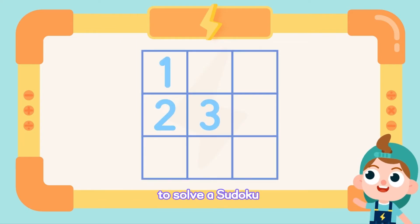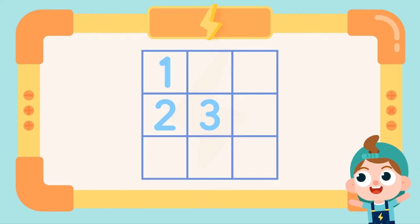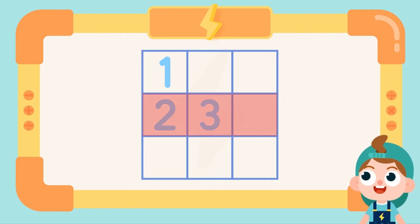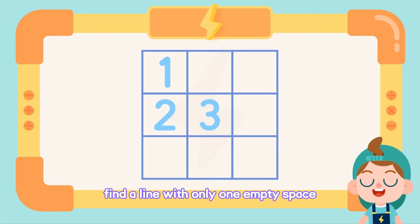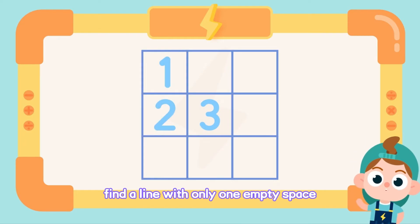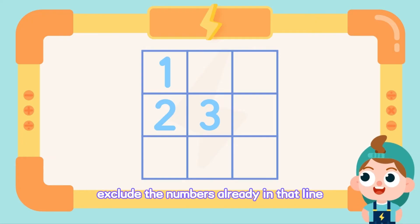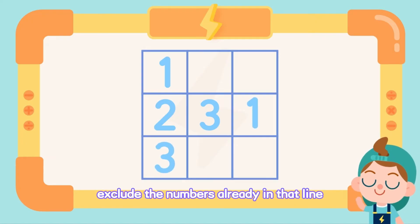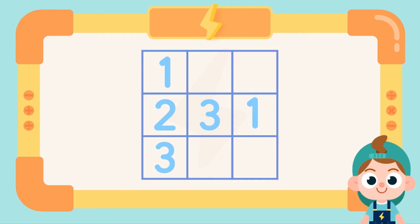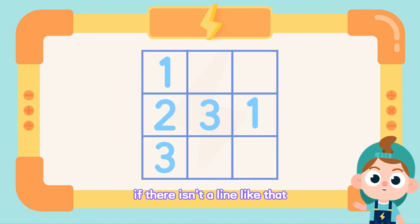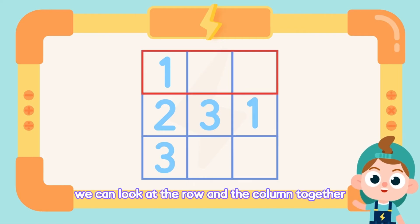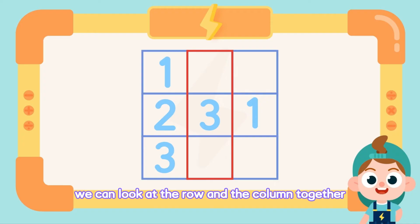To solve a Sudoku, we can use the exclusion method. First, find a line with only one empty space. Next, exclude the numbers already in that line. If there isn't a line like that, we can look at the row and the column together.